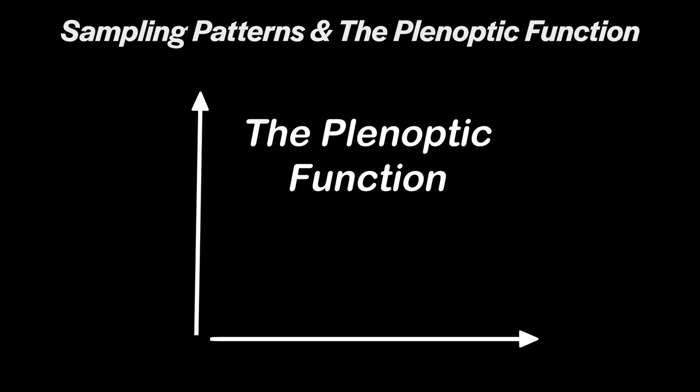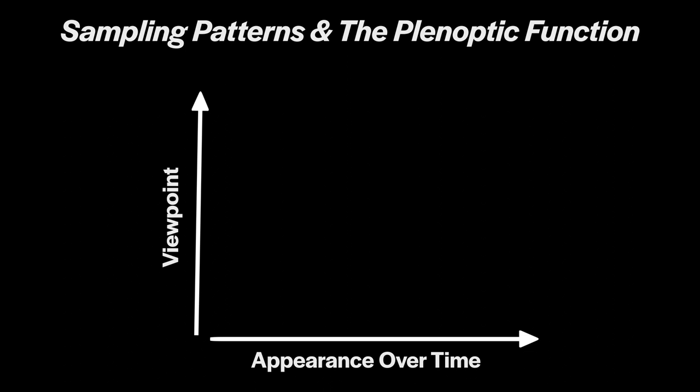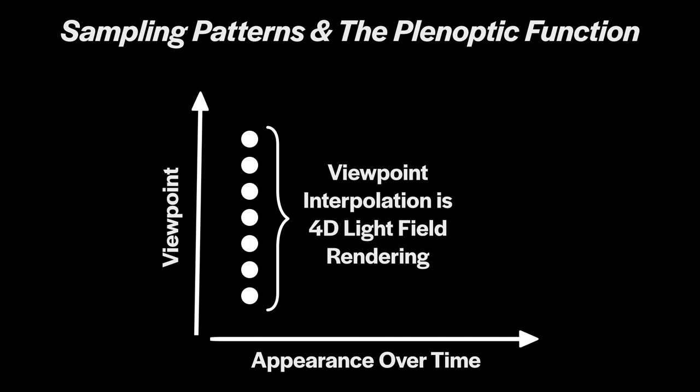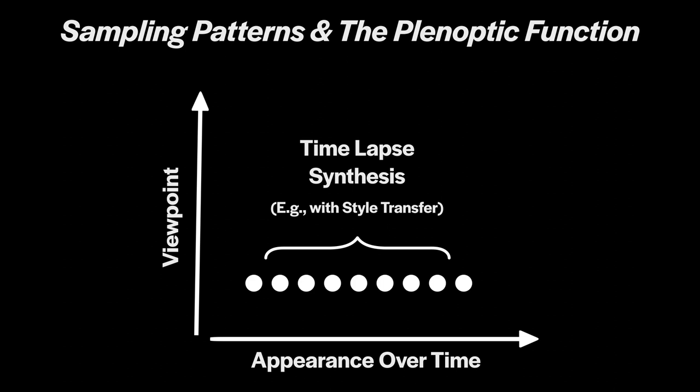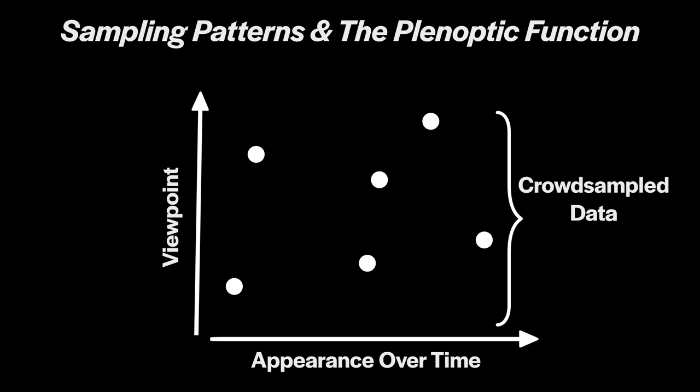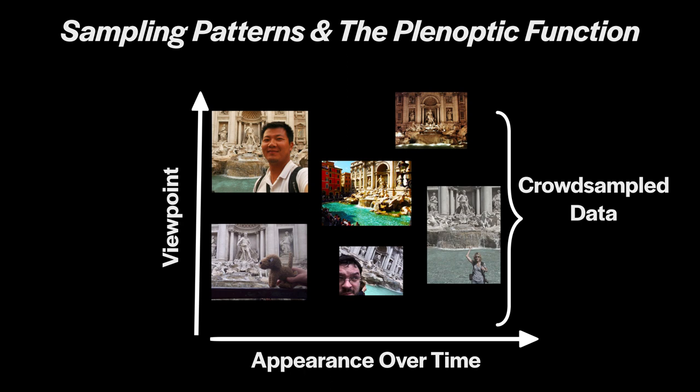We can frame this task in terms of reconstructing something called the planoptic function, which describes what something looks like from every possible viewpoint across space and time. Now interpolating between different viewpoints amounts to reconstructing a four-dimensional light field, which existing methods can do reasonably well. And interpolating one viewpoint over time can often be done with what's called style transfer. But what makes our task so difficult is the use of crowd-sampled data, which tends to be scattered across space and time, forcing us to learn structure related to all of these dimensions at once.